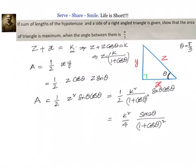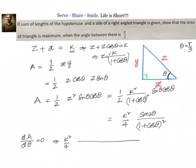To show that the area of the triangle is maximum, we differentiate with respect to θ and prove that θ = π/3. So let us set dA/dθ = 0. We take k²/4 outside.